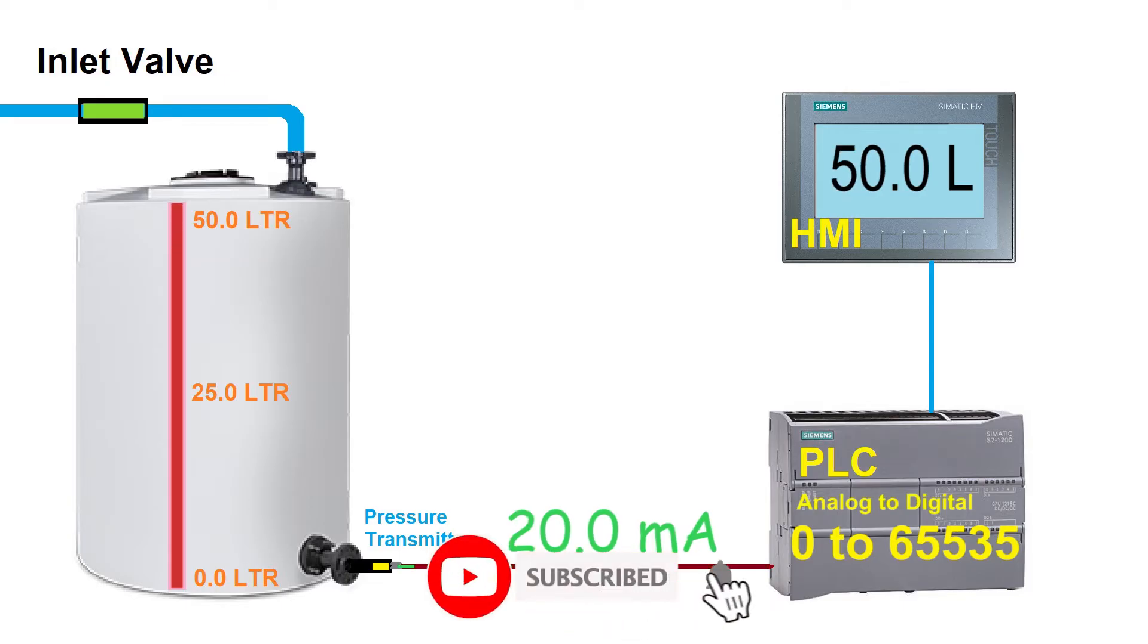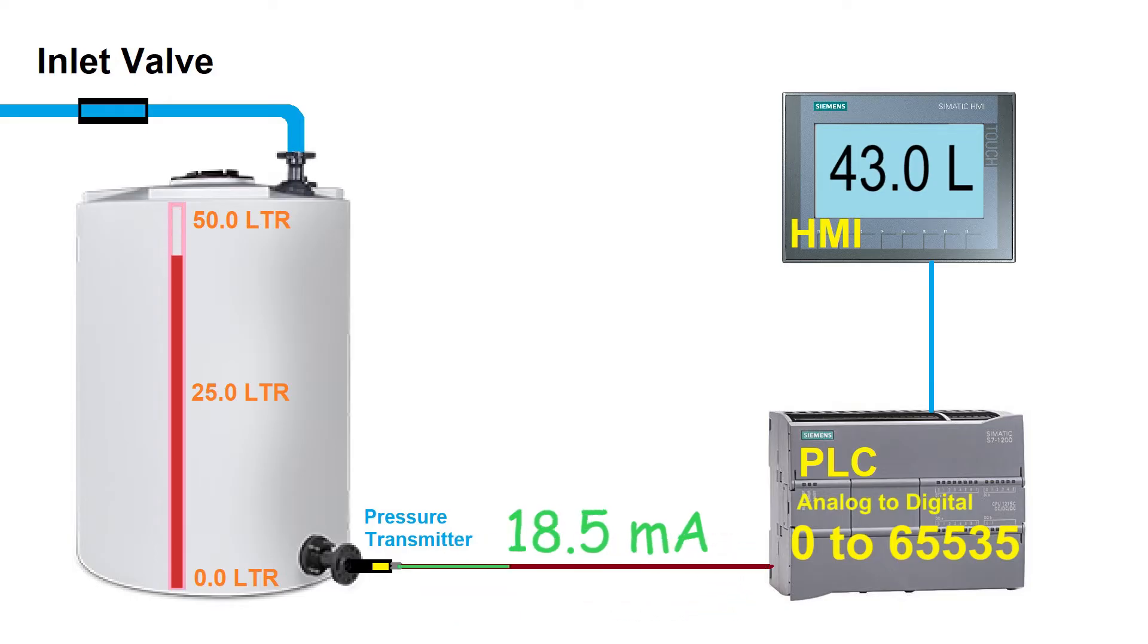Now let's discuss how we can convert our raw values coming from the level transmitter to the scaled tank level value in liters. One important thing, the tank level in liters is also called engineering values.